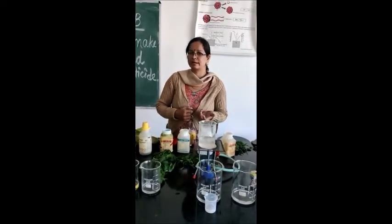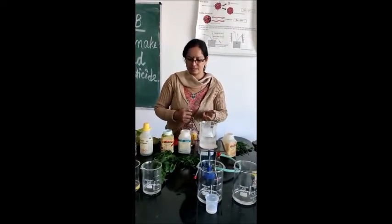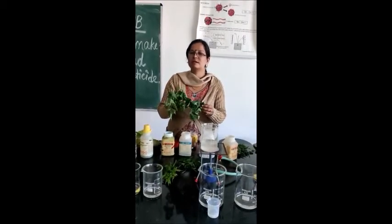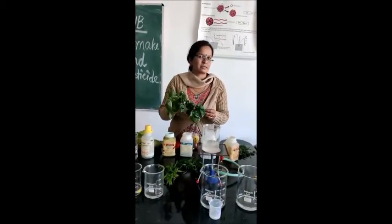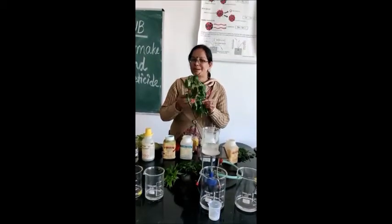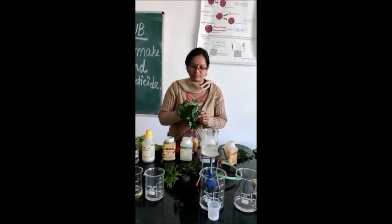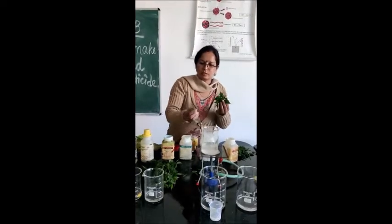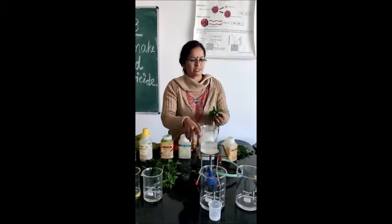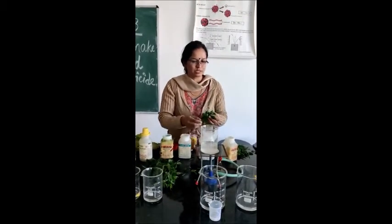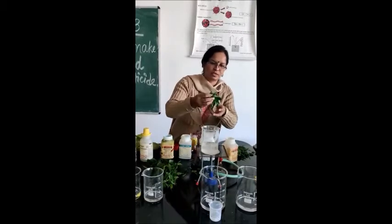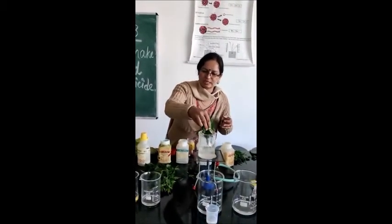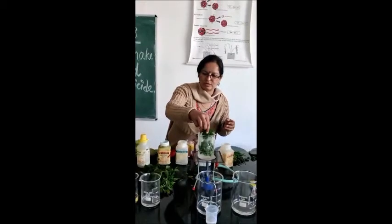Let us do the first activity for making the pesticide. We will start with organic things. We have neem leaves — neem leaves are the best organic pesticide. To make the pesticide from neem leaves, you take these neem leaves and boil them in water. As you can see, we have already started the boiling process. I will put these neem leaves in the boiling water and boil them for 10 to 15 minutes.